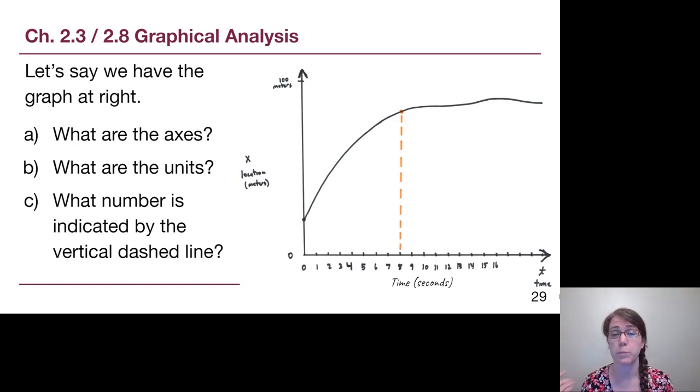So the vertical axis here is position or location in units of meters, and the horizontal axis here is time t in seconds. The number indicated by the vertical dashed line then is 8 seconds. We are taking 8 seconds and we're finding what position we had at that moment in time. The position is fairly straightforward to read off especially if we had more tick marks, but what we care about in this new example is what was our velocity at that exact moment.